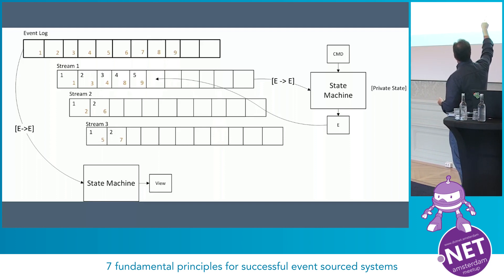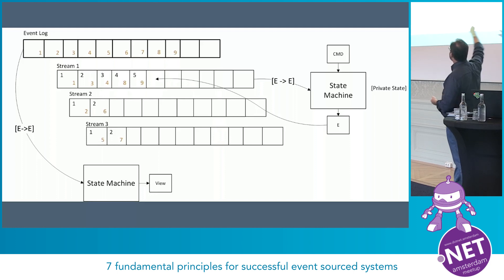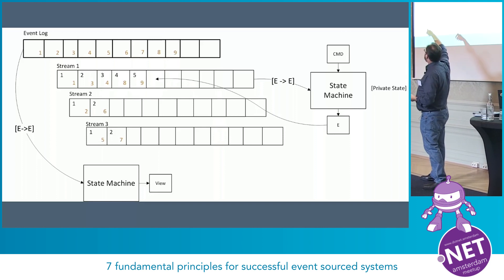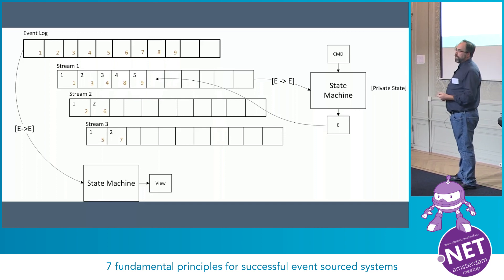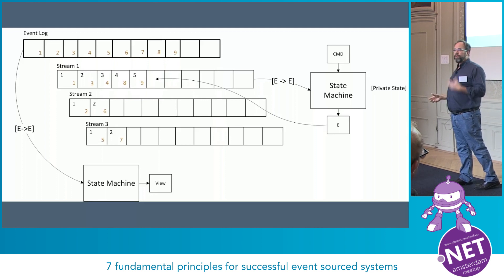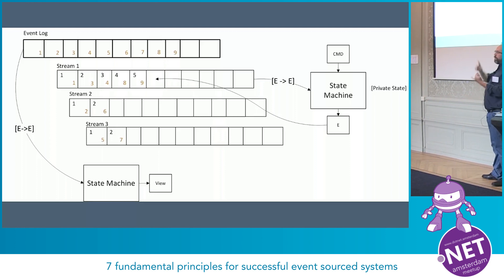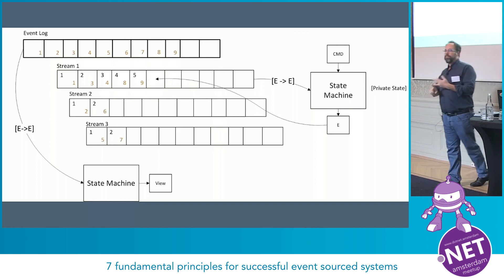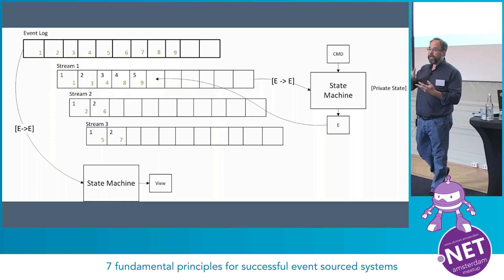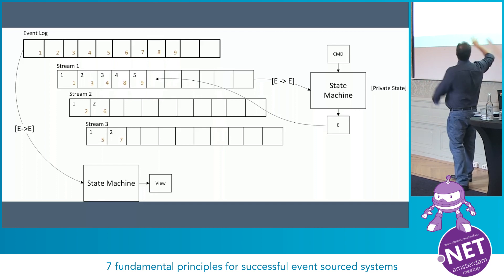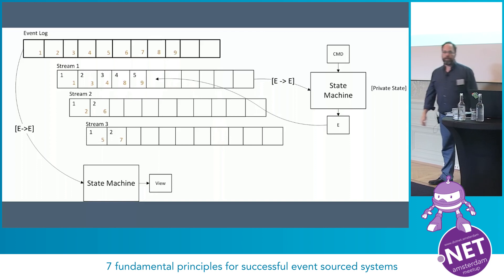On the right here is a state machine for accepting input and writing in the log. On the left we have a state machine which is reading the log and creating projections. So the view here could be a SQL table, a document in a document database, a view in your system, or a graph — whatever you need. Just two different types of state machines.